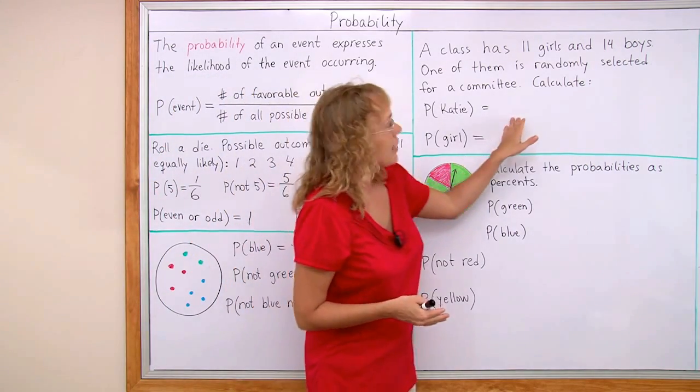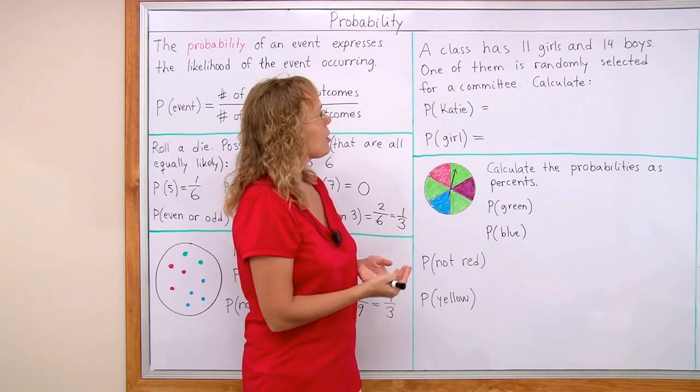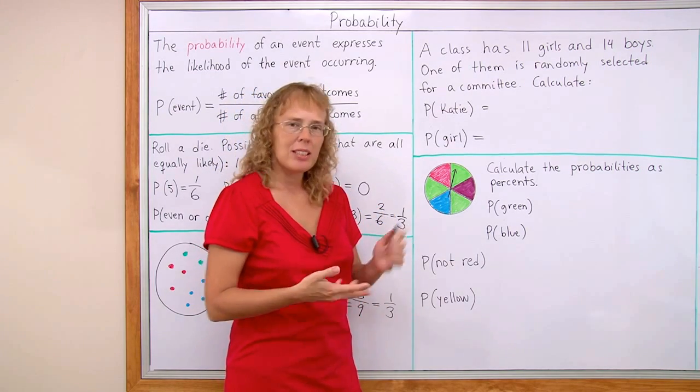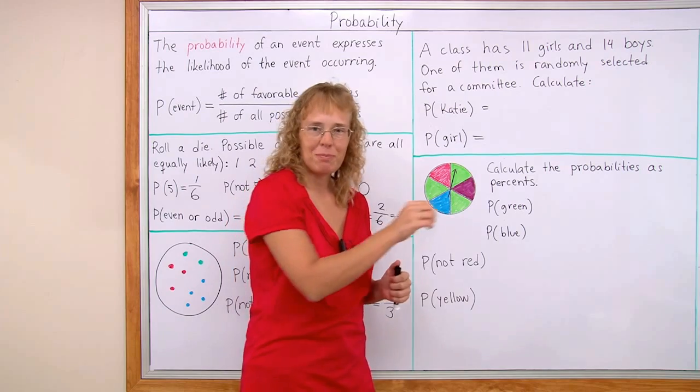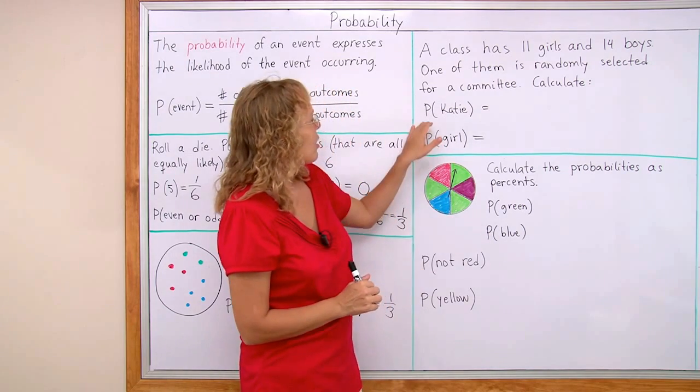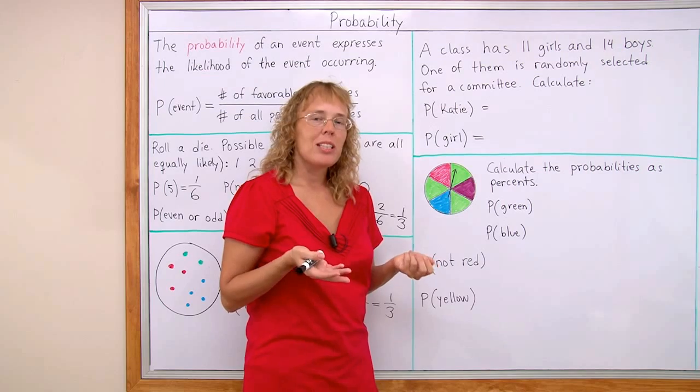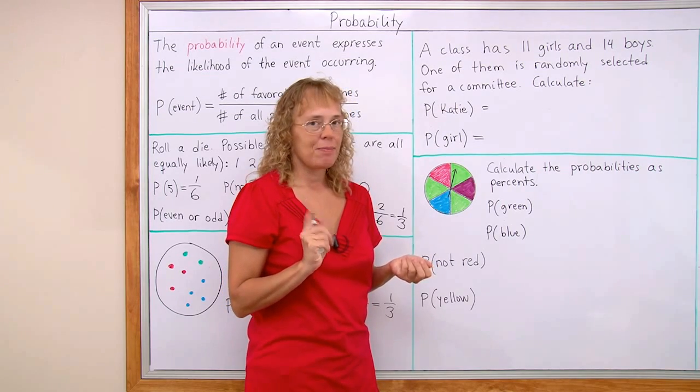Over here. A class has eleven girls and fourteen boys. One of them is randomly selected for a committee by some method maybe by drawing the name from a hat. Calculate the probability that Katie gets selected. Let's assume that in this class there's only one Katie.